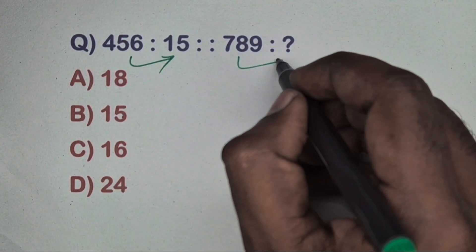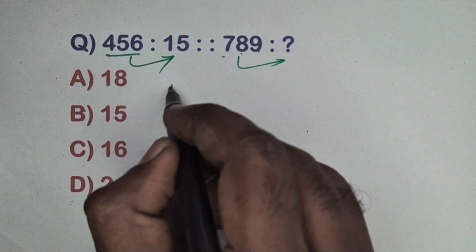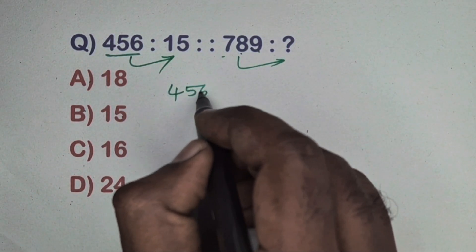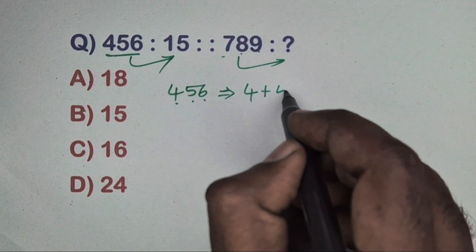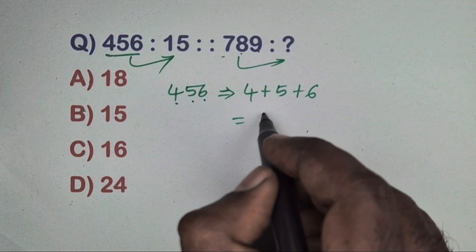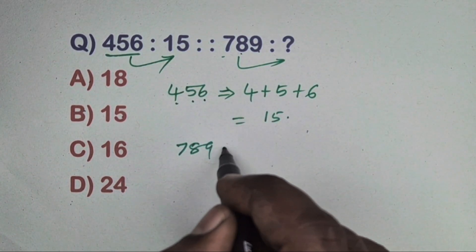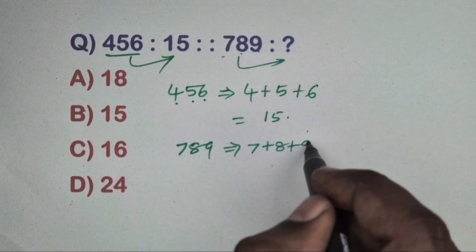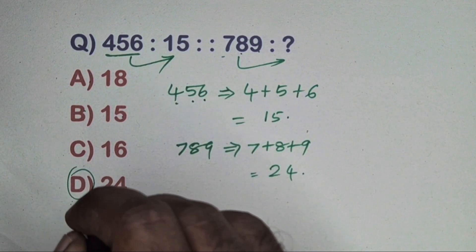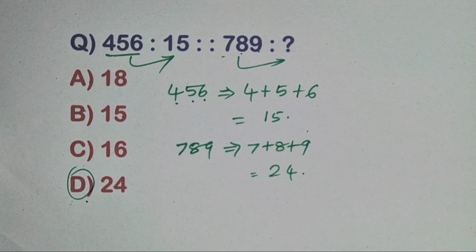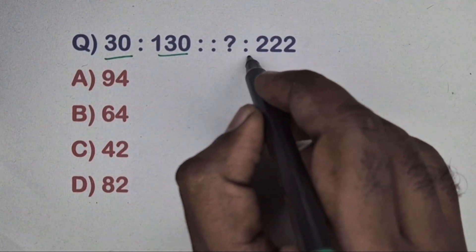Next question: 456 is related to 15 and 789 is related to which number? Take 456 — add individual digits: 4 plus 5 plus 6 equals 15. This is the addition method. Same way, 789: 7 plus 8 plus 9 equals 24. Option D is the correct answer.